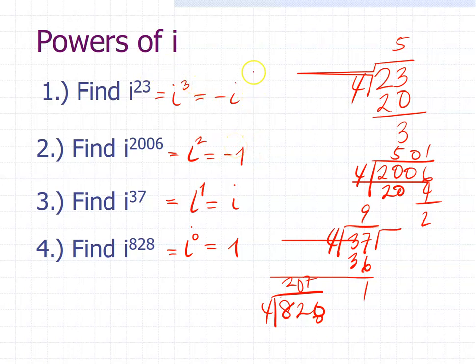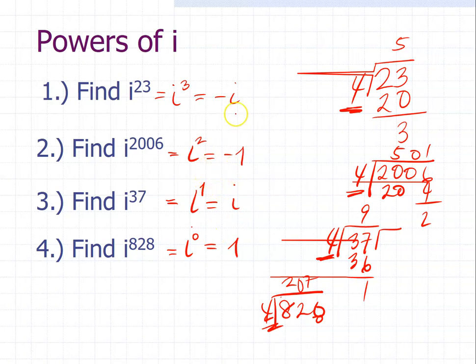As you can observe, we always use the pattern of 4 — we always divide by 4. So when solving problems where the exponent of imaginary numbers is greater than 4, you only need to divide the exponent by 4 and use the remainder to find the answer.